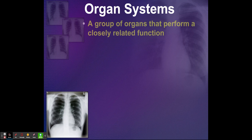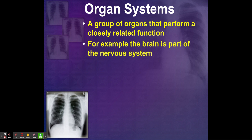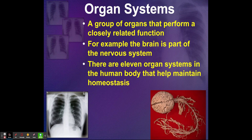Organ systems are a group of organs that perform a closely related function, such as your digestive system to digest your food. For example, the brain is part of the nervous system. There are 11 different organ systems in the human body — some say 12, depending on who you're talking to.